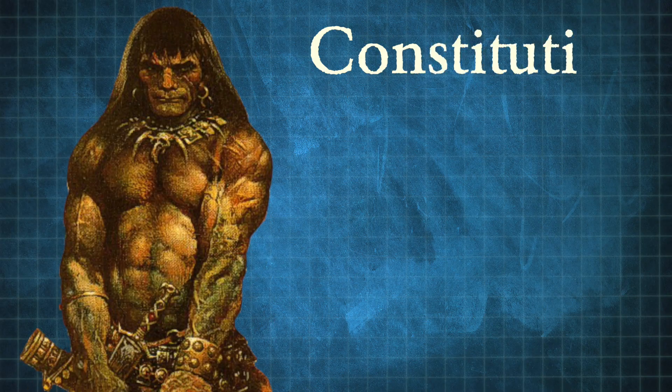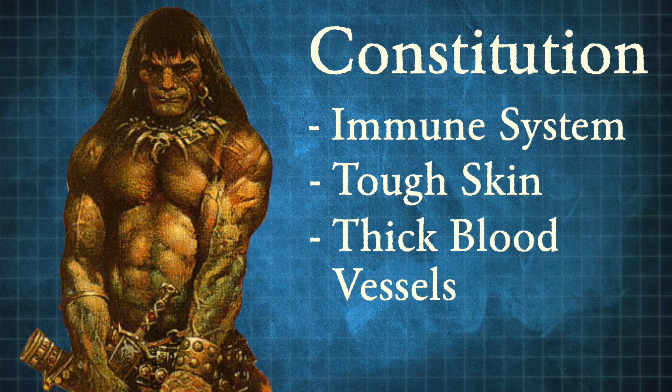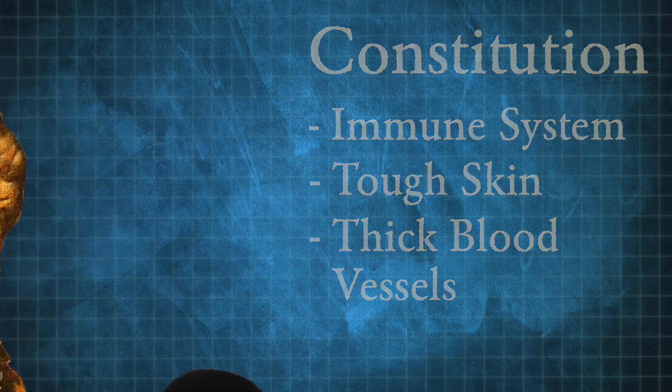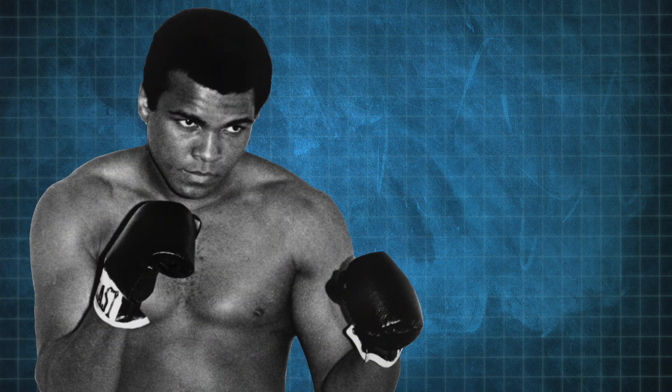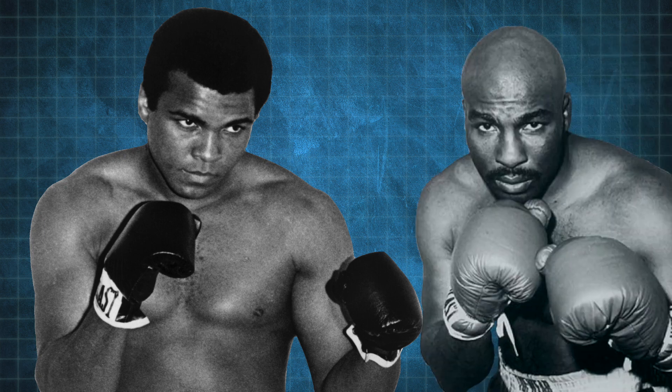Another component of injury resistance is constitution. Some people are genetically tougher than others, with not only stronger immune systems, but thicker skin and blood vessels, making it harder to cut or bruise them. Muhammad Ali had a chin of granite, while Ernie Shavers had a glass jaw. They're two guys about the same size, so what was the difference? Maybe it was, among other things, the genetic gift of constitution.